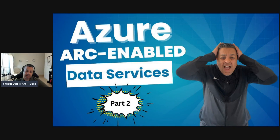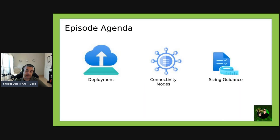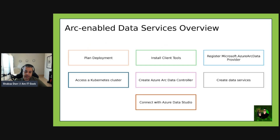Without further ado, let's get started with today's episode. This is Part 2 of Azure Arc enabled data services. In Part 1 we went through the introduction and overview — connected and non-connected services and so on. Today we're going to focus on deployment, connectivity modes, and sizing guidance, and then we'll go into the demo and look at some of the management features we can integrate with virtual machines hosted on VMware vSphere on-premises.